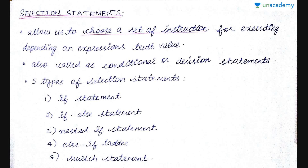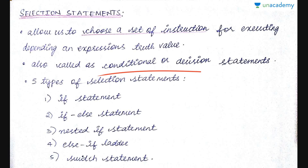Selection statements allow us to choose a set of instructions for execution depending on an expression's truth value. If it is true, some statements get executed; if not, some other statements get executed. This is called a selection — it selects what statement has to be executed, also called condition or decision statements. There are five types: if, if-else, nested if, else-if ladder, and switch.